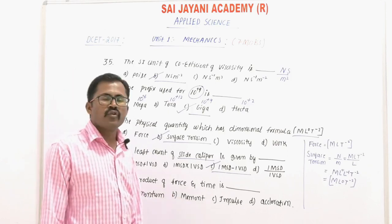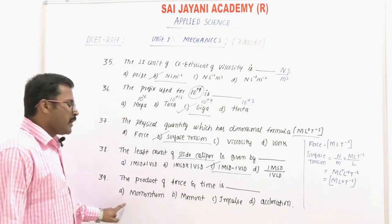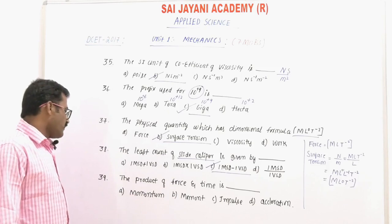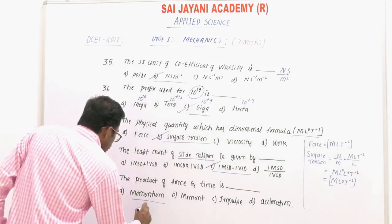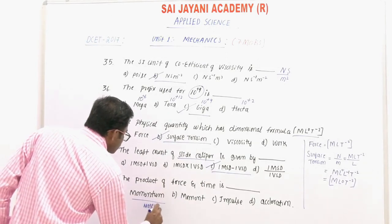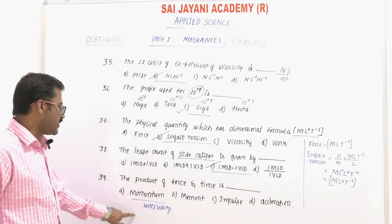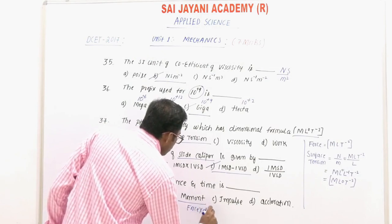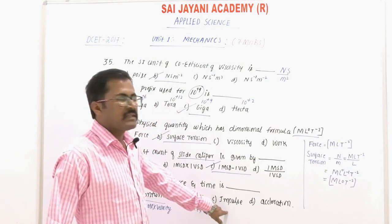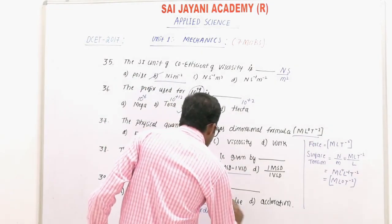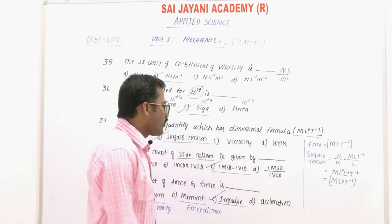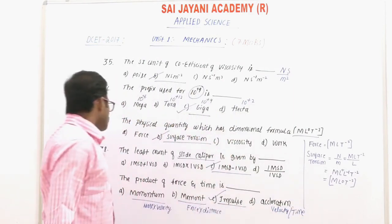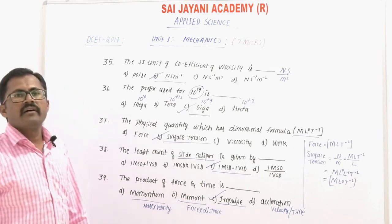Question number 39: the product of force and time is — option A: momentum, option B: moment, option C: impulse, option D: acceleration. Momentum is the product of mass and velocity. Moment is the product of force and distance. Impulse is the product of force and time. Acceleration is velocity divided by time. So option C, impulse, is the right answer.